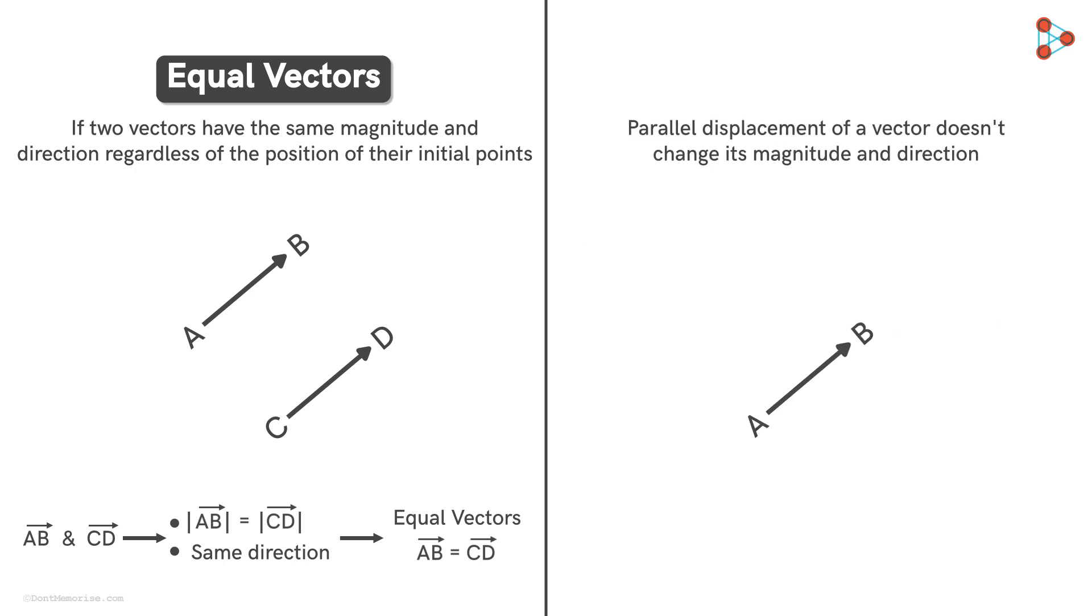For example, we can make two copies of vector AB by moving it parallelly in this direction or moving it in the same direction like this. Here, all the three vectors will be equal to each other. Such vectors are called free vectors.